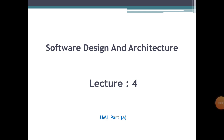Assalamu alaikum, welcome to lecture number four of Software Design and Architecture. Before we start today's lecture, I would like to give a brief recap of our last lecture. In lecture three, we discussed different types of decompositions and saw the tree-based decomposition, which we call abstraction external to the system. After that, we moved on to some real-world examples and saw the automatic ticketing issuing system used by passengers at a railway station.